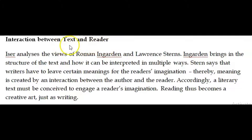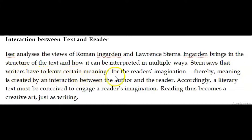Iser brings into discussion the views of Roman Ingarden and Laurence Sterns. Ingarden analyzes the structure of a text and how it can be perceived and interpreted in multiple ways, whereas Sterns says that writers have to leave certain meanings for the imagination of the readers. Thereby, meaning is created by a very active interaction between the author and the reader.